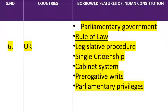Next है United Kingdom। United Kingdom के constitution से क्या borrow किया गया है? Parliamentary Government — संसदीय सरकार। Next है Rule of Law — विधि का शासन — इसे हम Article 14 में पढ़ेंगे। Next है Legislative Procedure — जो हमारा law-making procedure है, वो भी United Kingdom के constitution से borrow किया गया है।